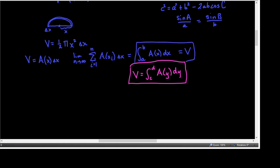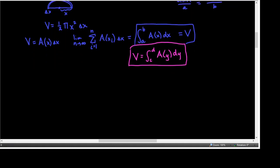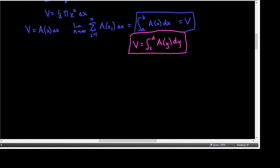Notice how this is different from volumes of solids of revolution: we don't have a π, and we don't have radius squared or anything like that. This is just the area of the face integrated from A to B.